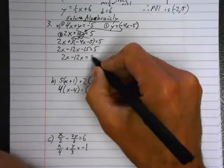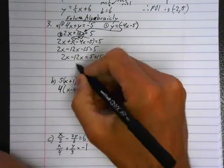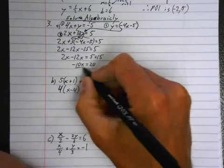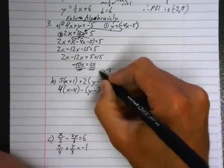Bring the 15 over, it becomes positive 15, so 5 plus 15. So, you get negative 10x equals 20, divide off the negative 10, and x equals negative 2.